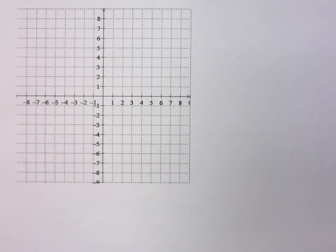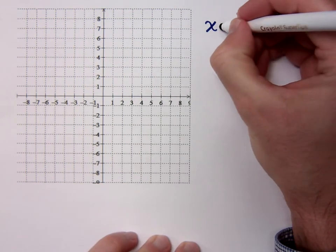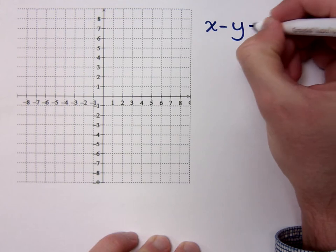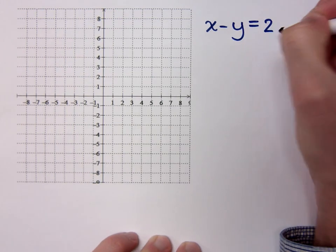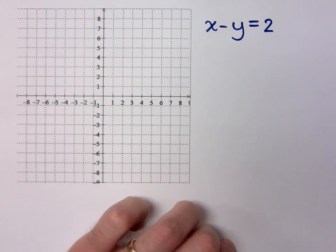When we talked about graphing from before, I could give you an example like this. x minus y is equal to 2. This is a linear equation in two variables, and we talked about what solutions to this guy look like.